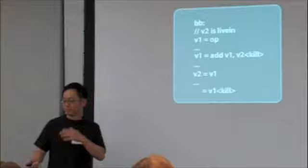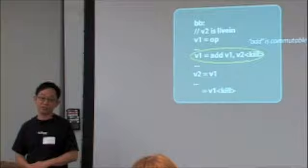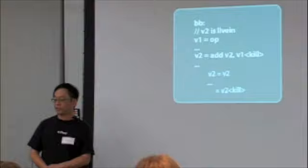But notice V1 and V2's life intervals obviously overlap. We cannot coalesce it. However, we know that add instruction in this case is commutable. We take advantage of this property by commuting it. Forward substitute V1 to V2. And turn the copy into an identity copy, and we can eliminate that copy.